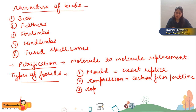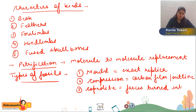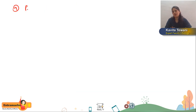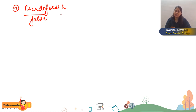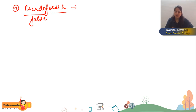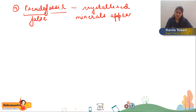Coprolite means the fossil of faeces — faeces turned into fossils. It is very difficult to identify organisms through it. Pseudofossils are not true fossils — what happens is minerals of plants get crystallized in the crevices of rocks and appear like plant fossils. These crystallized minerals appearing as fossils are called pseudofossils.